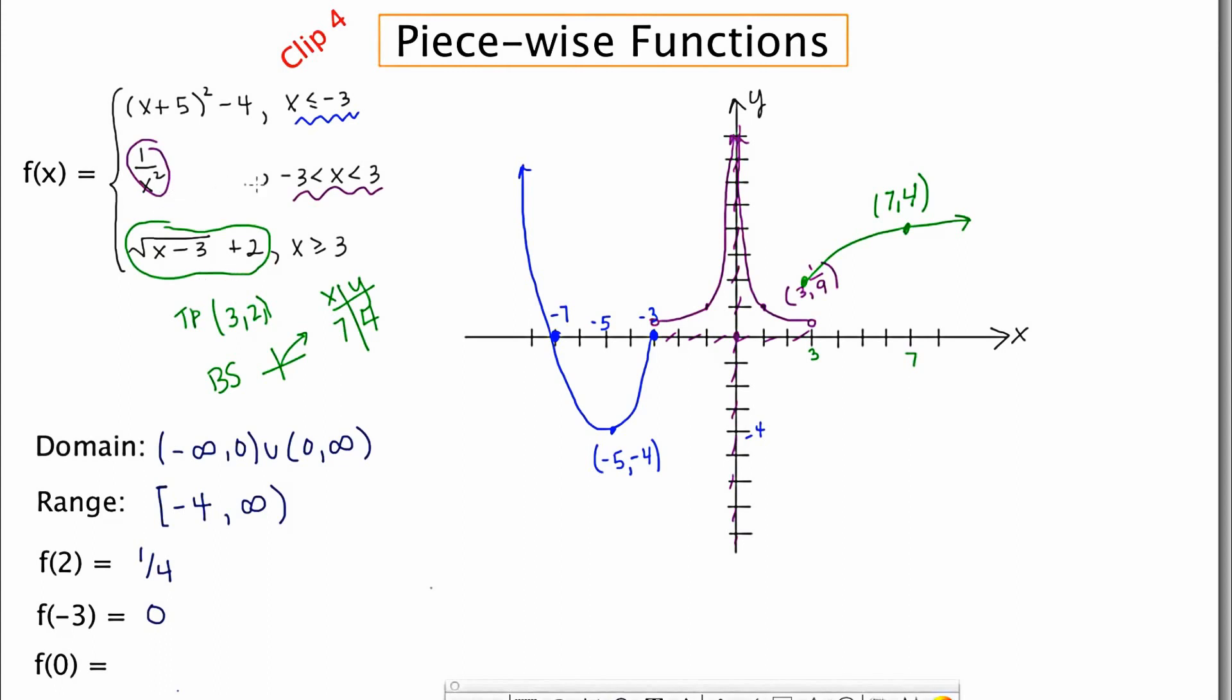F of zero. Zero is between negative three and three again. So it's going to be the middle piece. And if I let x equal zero, we get a situation that's undefined and that's where the asymptote is. So I'm going to write the whole word undefined. Some people write no solution and I guess that's okay too.